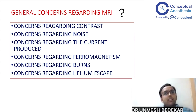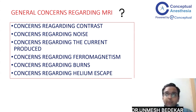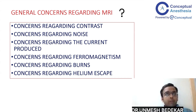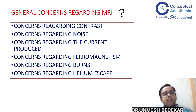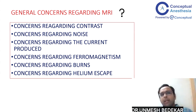The general concerns regarding MRI can be broadly classified into: concerns regarding contrast, concerns regarding the noise produced by the MR scanner, concerns regarding induced current, and concerns regarding ferromagnetism — one of the most important concerns, which has led to patient deaths when ferromagnetic substances were not screened and brought into Zone 4, causing trolleys or patients to be drawn to the magnet. There are also concerns regarding burns and helium escapes.